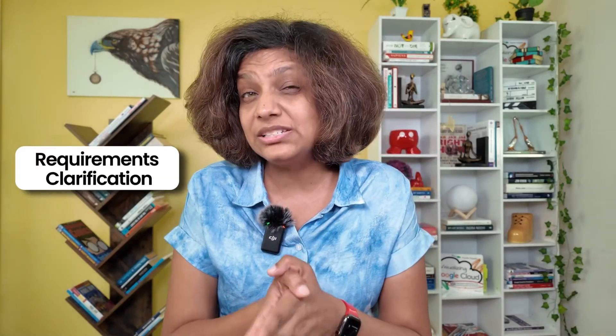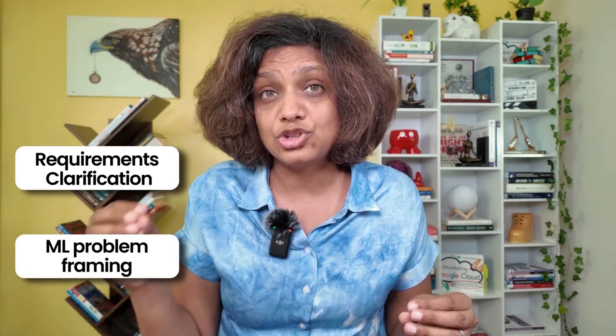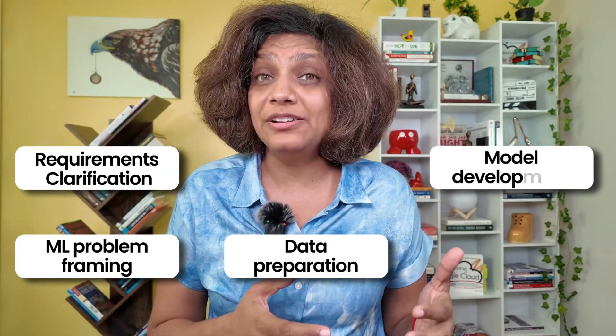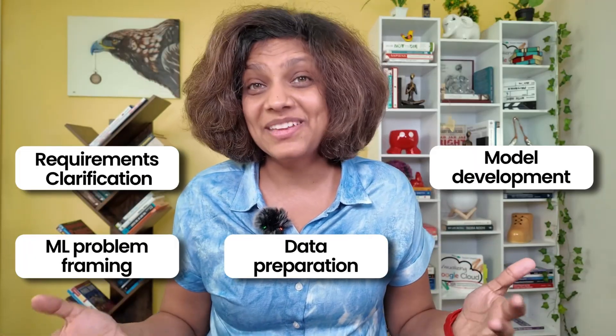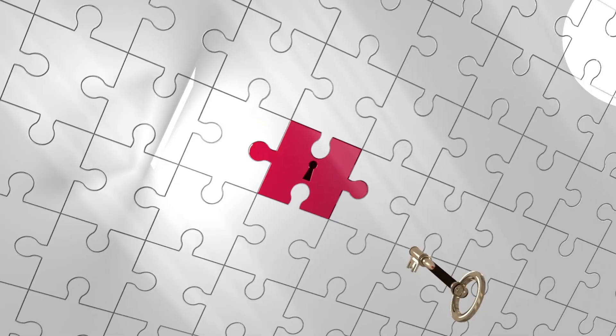Here's the five-step framework that will help you attack any generative AI system design question. The five phases are: requirements classification — getting crystal clear on what we're building; machine learning problem framing — choosing the right approach; data preparation — the unsexy but critical foundation; model development — the architecture decisions that scale; and evaluation — proving your system can work in production. Whether you're designing ChatGPT or Sora, email completion or face generation, this framework adapts perfectly.